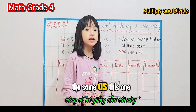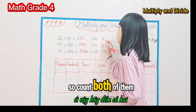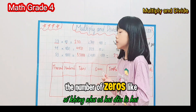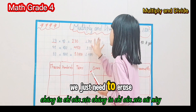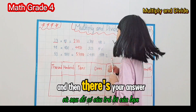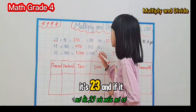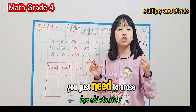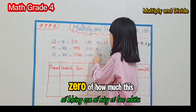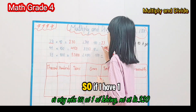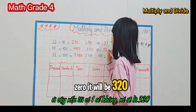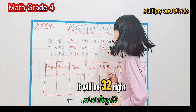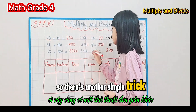There's another simple trick for dividing. If both numbers have the same number of zeros, you just erase them and there's your answer. For example, 2300 ÷ 100 — both have two zeros — erase two zeros, and you get 23. If the number being divided has more zeros, just erase as many zeros as the divisor has. For example, 3200 ÷ 10 = 320.